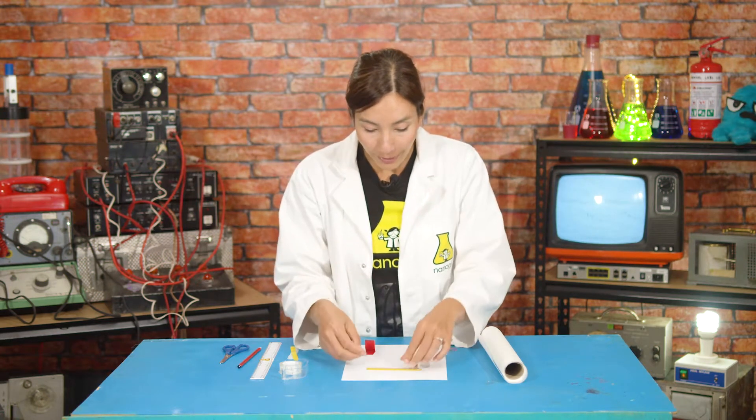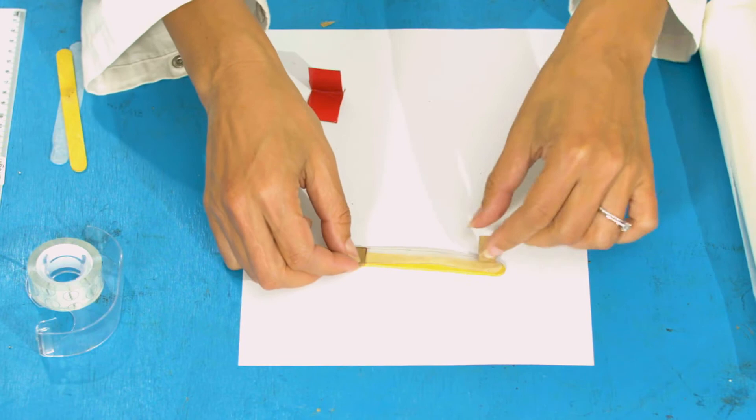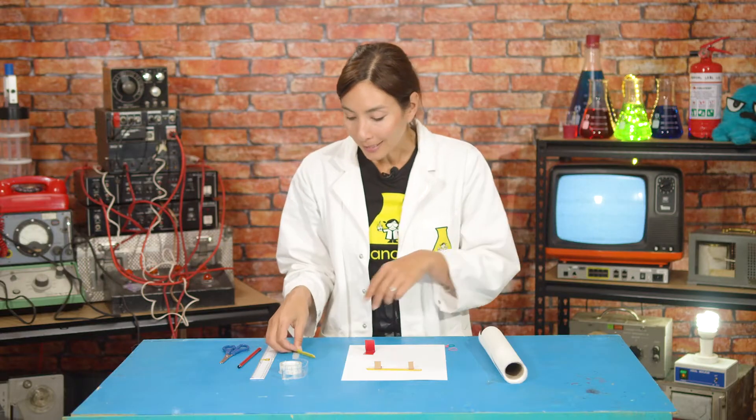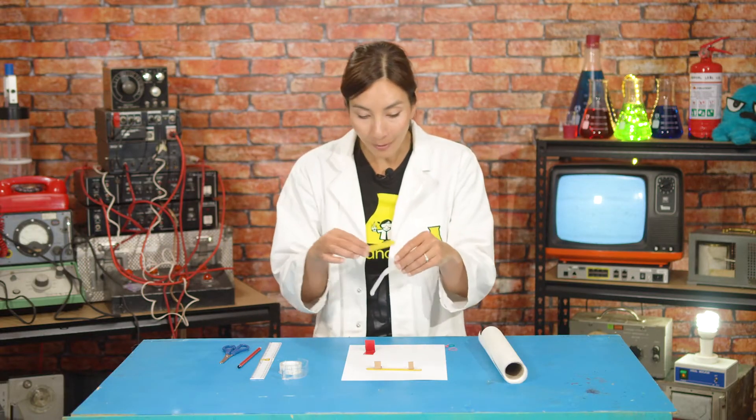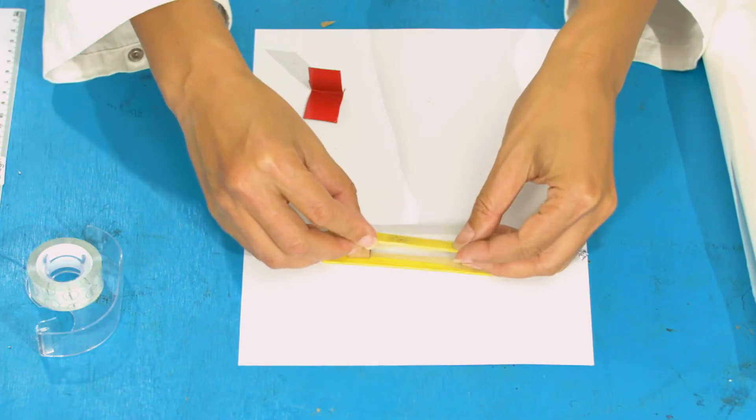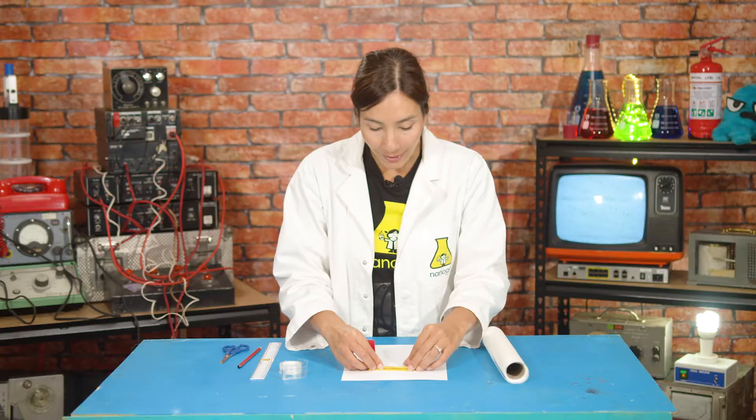Now you're going to take the other small rectangle, fold it in half and place it on the other side like this. Next you're going to add your next piece of baking paper and then your popsicle stick on the top. So there we have our sandwich.